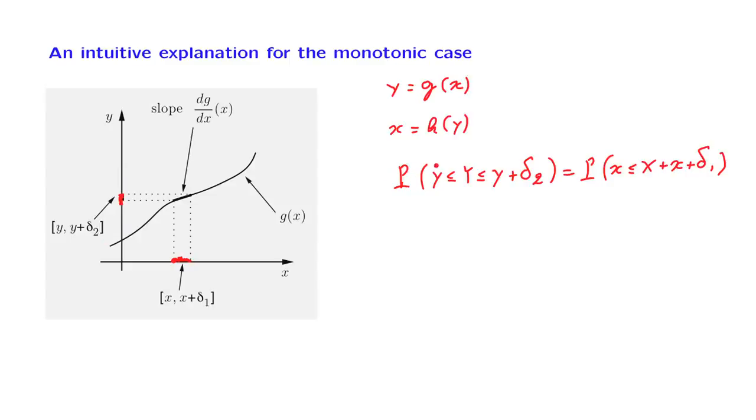Now remember our interpretation of probabilities of small intervals in terms of PDFs. So this probability here is approximately equal to the PDF of y evaluated at the point y times the length of the corresponding interval.